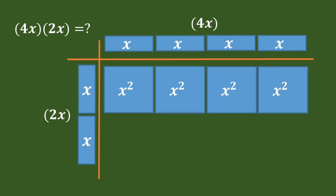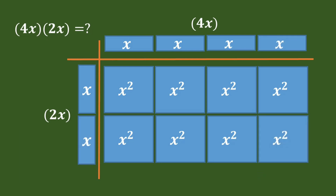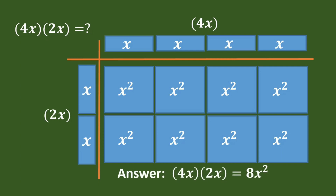We now have the product in the first row. Let's proceed to the second row: x times x equals x squared, x times x equals x squared, x times x equals x squared. So we are done multiplying the tiles. Inside is our product — we count the tiles that are the same: 1, 2, 3, 4, 5, 6, 7, 8. We have 8 x-squared tiles. Our product is 8x squared.